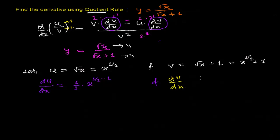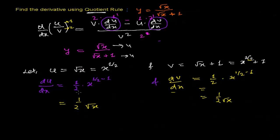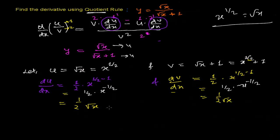Now for dv/dx, differentiating v with respect to x using the power rule, the power is 1 by 2, so we get 1 by 2 times x to the power minus 1 by 2, which equals 1 by 2 root x. Similarly, du/dx also simplifies to 1 by 2 root x, since x to the power minus 1 by 2 equals 1 over root x.